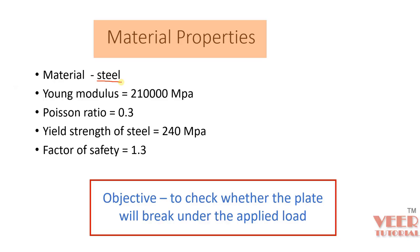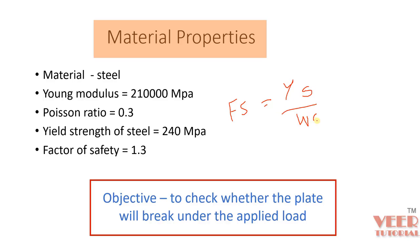We are considering a steel material. The yield strength of the steel is 240 megapascal. Yield strength means it is the maximum stress that the steel material can take. The factor of safety is 1.3. We can calculate working stress using the formula: working stress equals yield strength divided by factor of safety, which is 240 divided by 1.3.